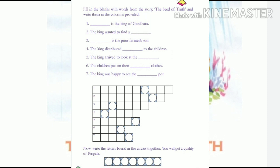Fourth: 'The king distributed Dash to the children' — what did the king distribute? Fifth: 'The king arrived to look at the Dash.' Sixth: 'The children put on their Dash clothes' — what type of clothes? Seventh: 'The king was happy to see Dash port' — which type of plant made the king happy? These are all things you have to write. After writing, put the first letter in the first column, second in the second box, and so on — you will get one word at last.